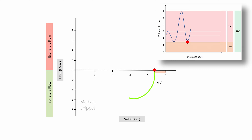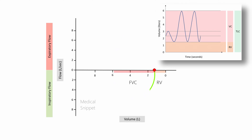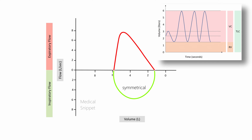After completing the inspiratory flow loop, the person forcibly expires. This volume of air expired is called the forced vital capacity (FVC). The forced vital capacity together with the residual volume is called the total lung capacity. The inspiratory curve is symmetrical and saddle-shaped.